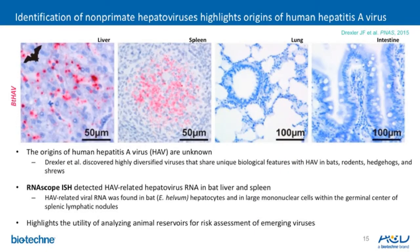This is an example of RNA Scope to detect the hepatitis A virus. The origins of human hepatitis A virus are unknown. Drexler discovered highly diversified viruses sharing unique biological features with HAV in bats, rodents, hedgehogs, and shrews. This is a great example of how, knowing the sequence, RNA Scope can be designed to detect any species with high sensitivity and specificity. RNA Scope in-situ hybridization detected hepatitis A viral-related hepatovirus RNA in bat liver and spleen, with HAV-related viral RNA found in bat hepatocytes and in large mononuclear cells within the germinal center of splenic lymphatic nodules.